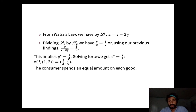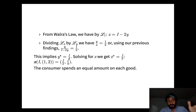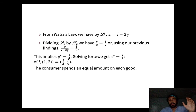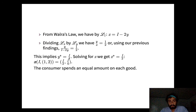Plugging y* = I/4 back into the budget constraint gives x* = I/2. So the Walrasian demand when income is I and the price vector is (1, 2) is the bundle (I/2, I/4). The consumer optimally demands I/2 units of x and I/4 units of y. That's all for this video, and we'll analyze that solution further in the next one.